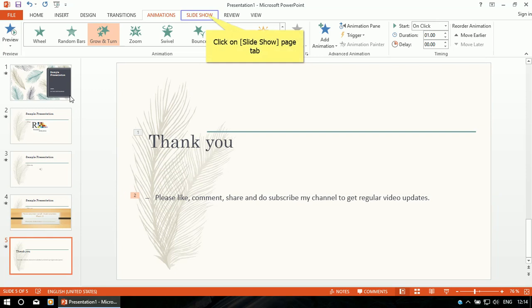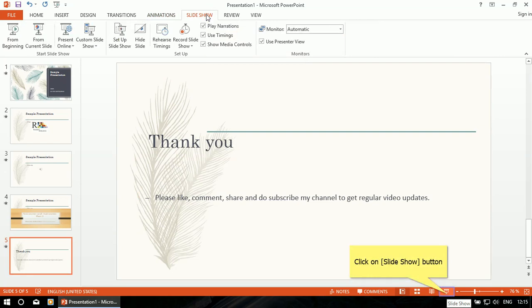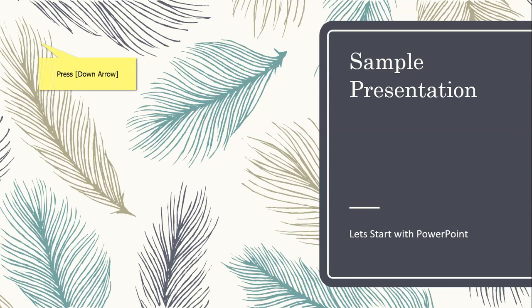Now we have to play the PowerPoint presentation to check whether all the effects are working correctly — whether the design is okay and the presentation is designed in a proper way. Go to the Slide Show menu and select From Beginning, or press F5, or click the Slide Show button on the status bar. You can see that each and every effect which we inserted is properly shown.